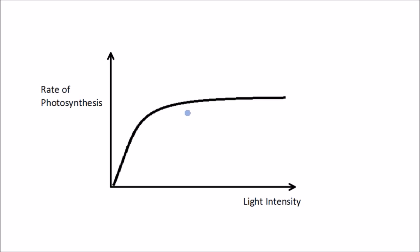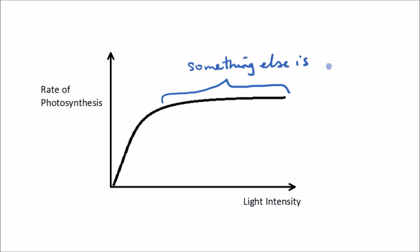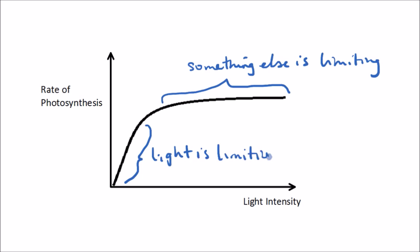However, after a certain point, even if we continue increasing the light intensity, the rate doesn't increase any further. The reason is that something else must be limiting the rate of reaction. Here we have plenty of light and we're increasing it, so light intensity is not the limiting factor at this stage — something else is. Up to that plateau point, light is the limiting factor, but beyond it, something else is holding the rate back.